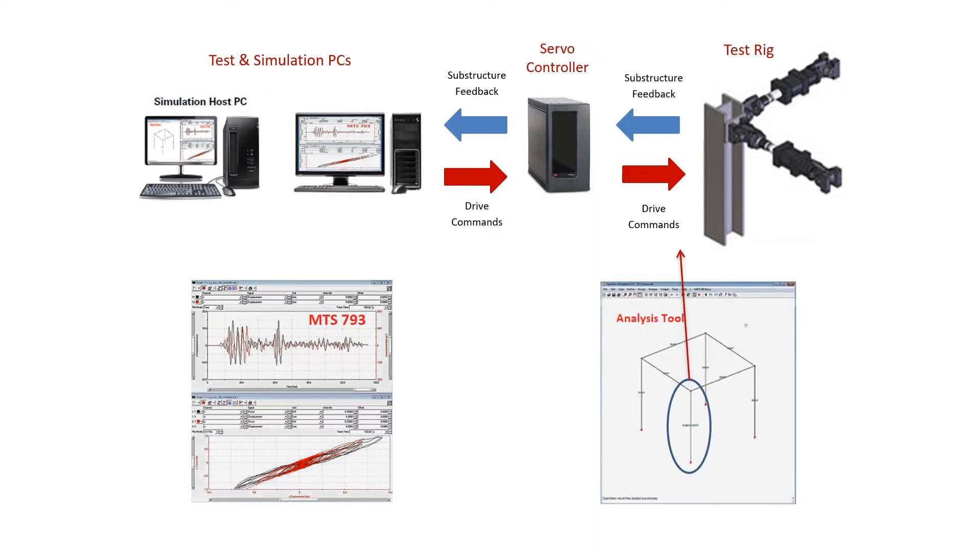An analysis modeling tool, such as OpenSeas or Abacus, is used for the finite element modeling of the computational substructure. Here, we are using Nikon, the network interface for controllers, which is a program developed by the University of Toronto. Nikon is a middleware program that connects the computational model to the physical test rig.